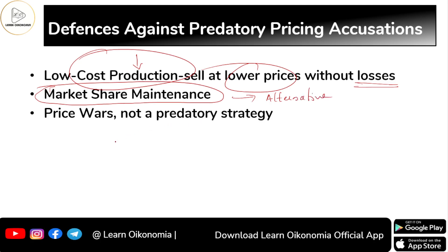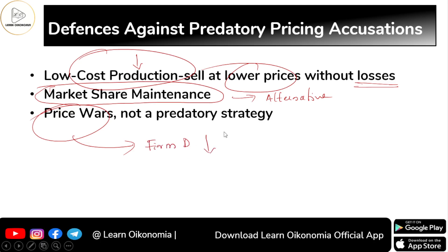A third defense used by predatory firms is to say: 'We are not engaging in predatory strategy — this is only a price war. We are reducing the price, so why can't other firms also reduce their price?' They argue that others have no right to complain against them.